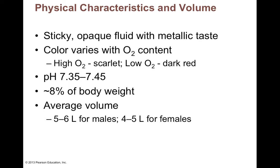Blood's color varies based on the concentration of oxygen and how much oxygen is bound to hemoglobin. We talked about this with the oxygen-hemoglobin dissociation curve and the pulse oximeter. The pulse ox shines a light through your fingernail and reflects it back to a sensor. The reflected light changes based on the color of the blood, which changes based on O2 content. If your blood has a lot of O2, it's more scarlet red; if it's low O2, it's a darker red — just variations of shades of red.